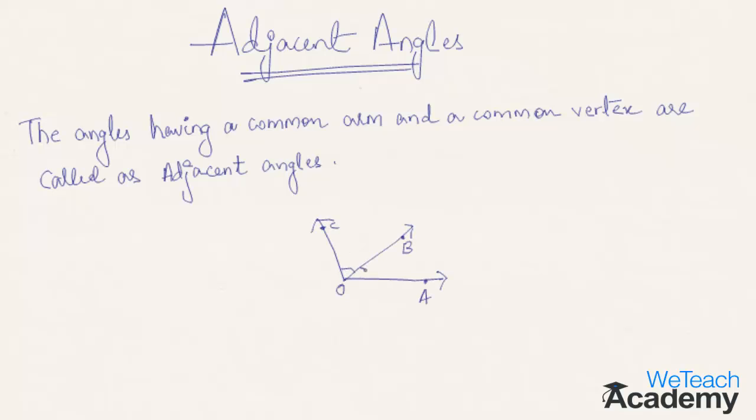Here in this figure we have a pair of angles, that is angle AOB and angle BOC. We can say that these pair of angles are adjacent angles since they have a common vertex that is O which lies here, and a common arm that is OB which is here.